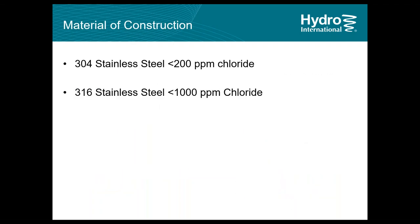The most common material of construction for the HydroBrake Optimum is 304 or 316 stainless steel, which is an accepted standard for most stormwater and wastewater applications. As material grades, 304 stainless steel is suitable for chloride levels up to 200 ppm, and 316 stainless steel for less than 1,000 ppm.